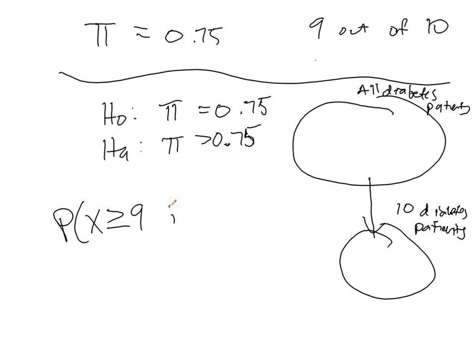Greater than or equal to 9 if pi is equal to 0.75. So, in our case, pi is going to be represented in the binomial probability by p, because that's what we've been used to. So if p, the probability of success, is 0.75...